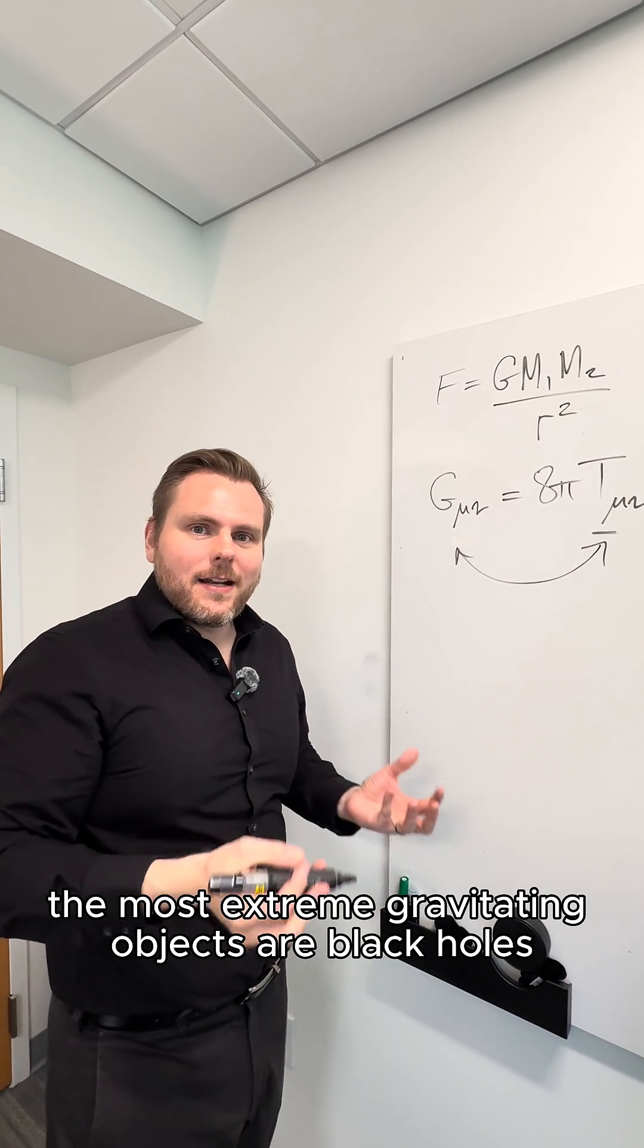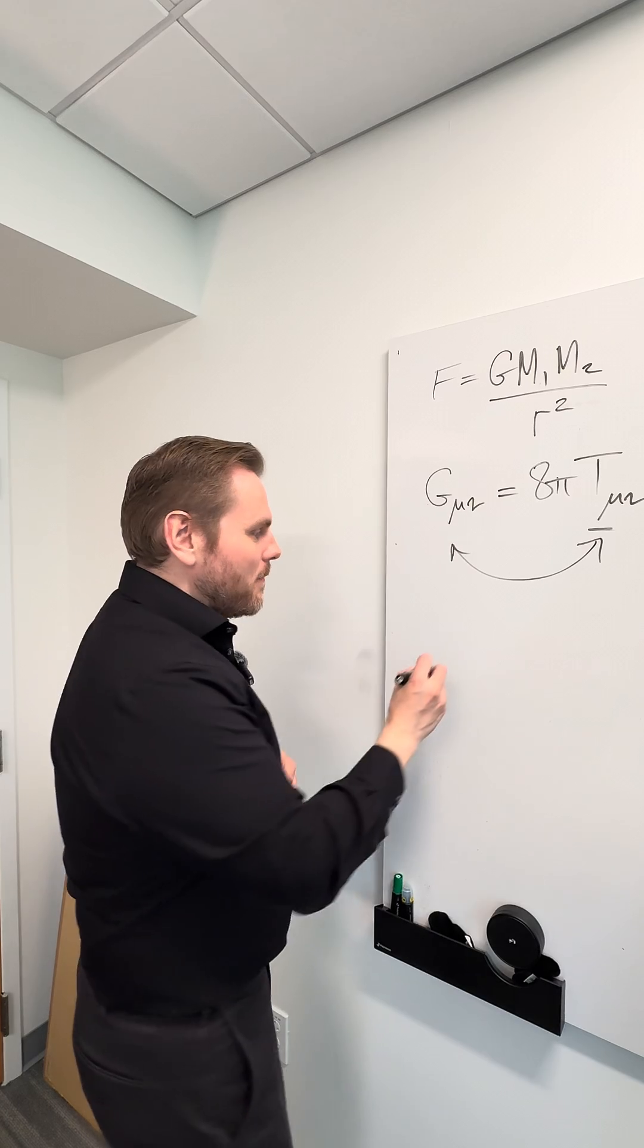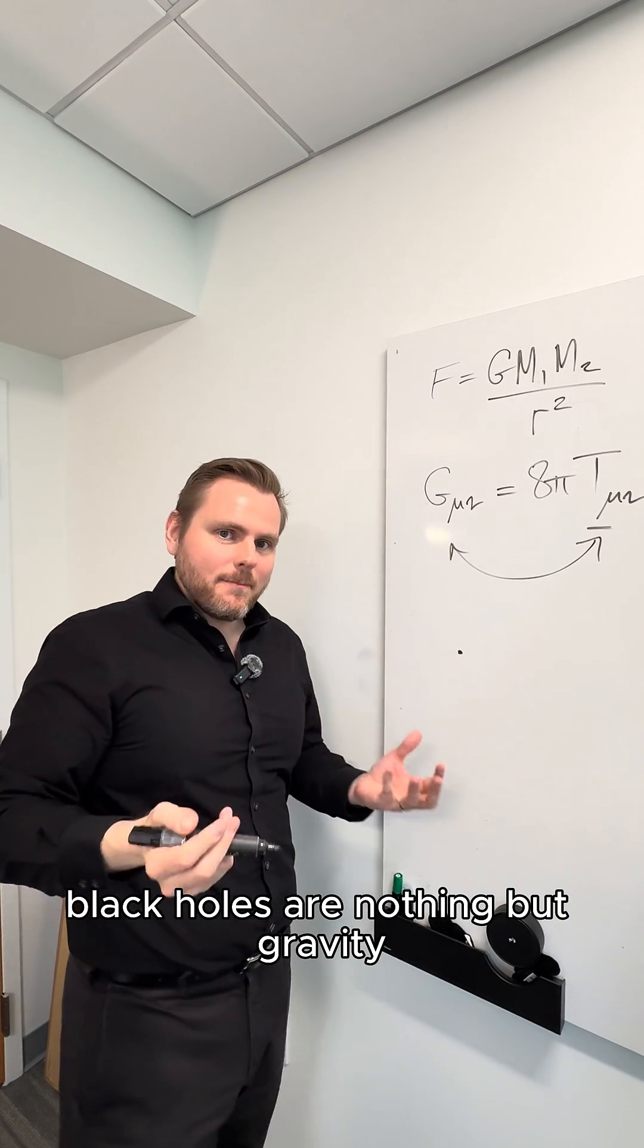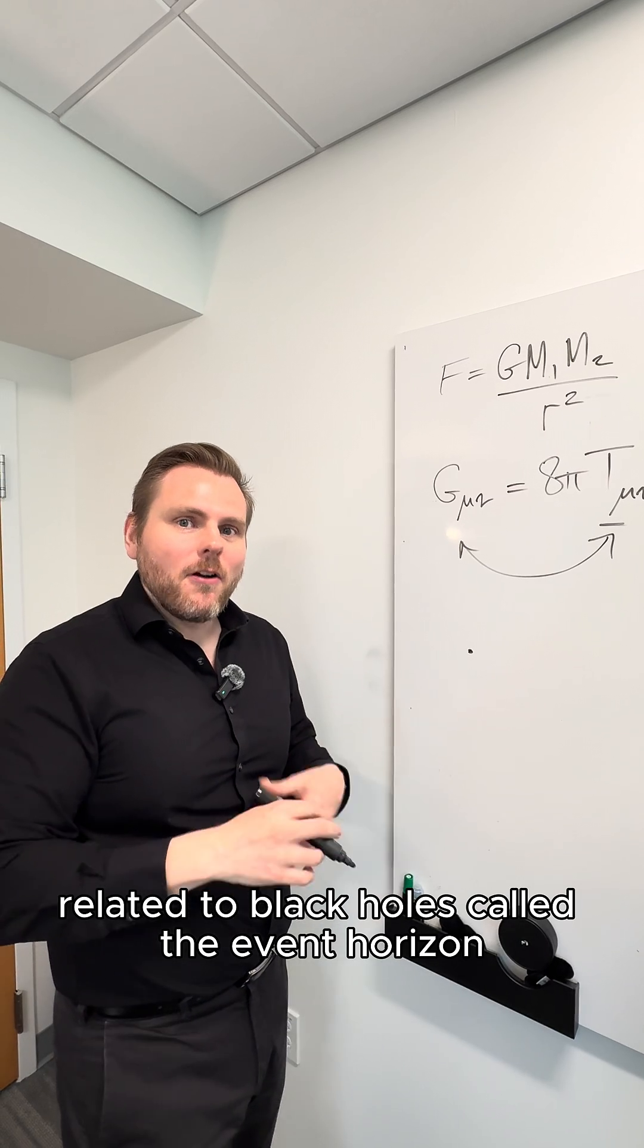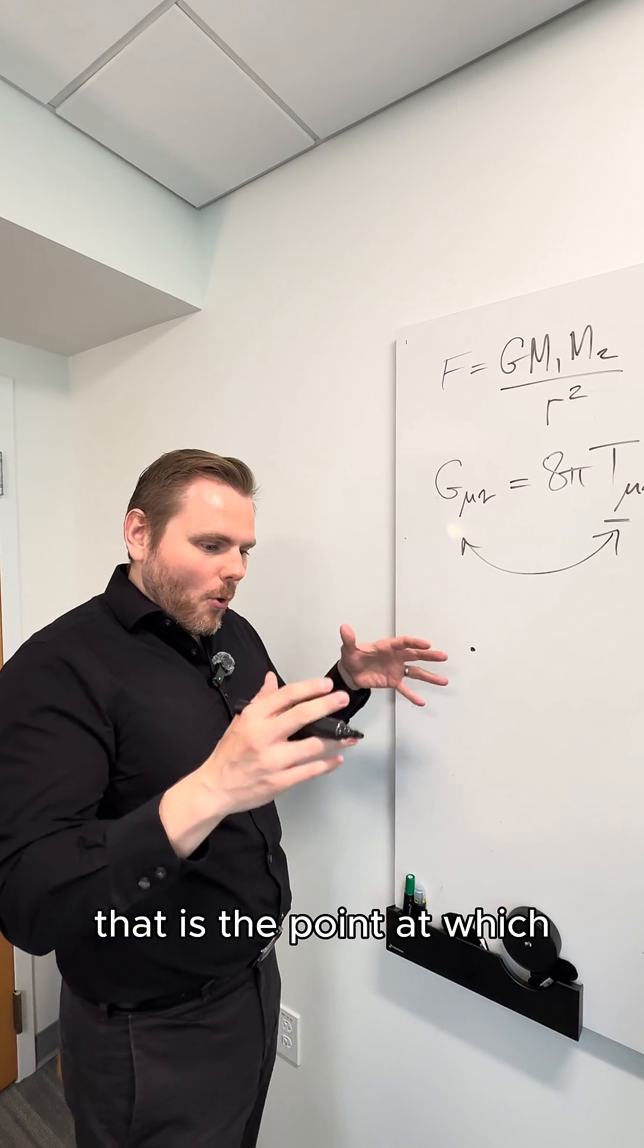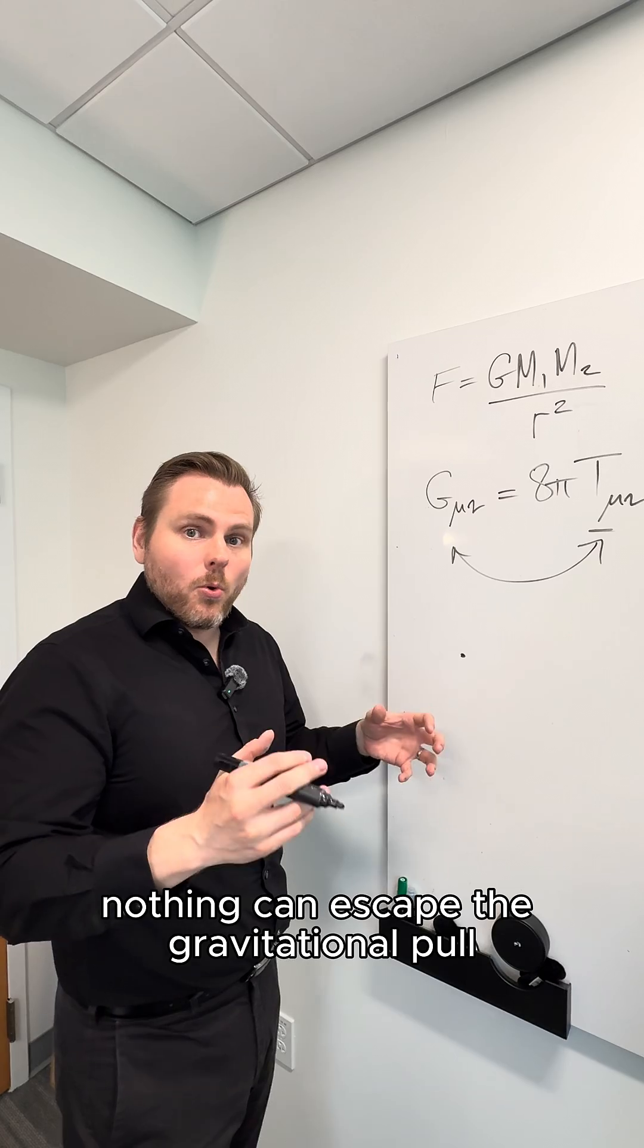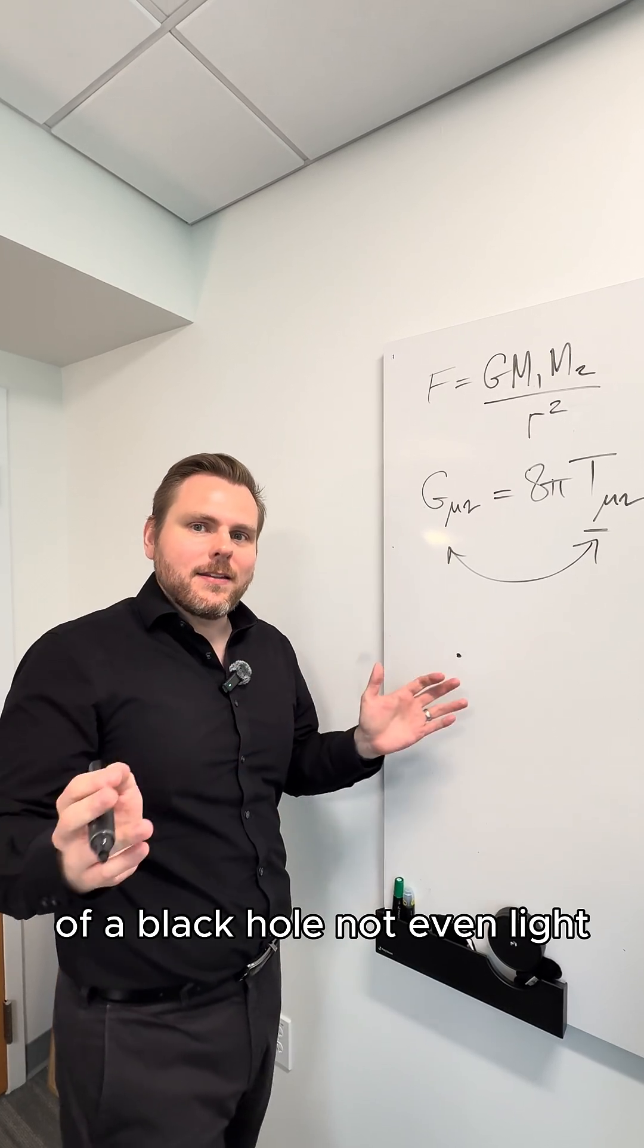The most extreme gravitating objects are black holes. Black holes are nothing but gravity. And there's something related to black holes called the event horizon. That is the point at which nothing can escape the gravitational pull of a black hole, not even light.